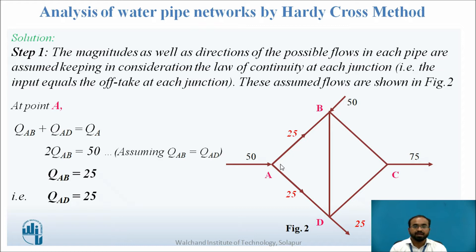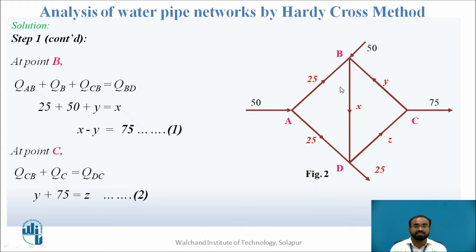Now talking towards the other points where flow rates have been added or removed, we will assume that the flow rate from B to D is X, flow rate from C to B is Y, and flow rate from D to C is Z. Considering point B and writing the equation of continuity — summation of flow rates coming into the point equals summation of flow rates going out — we get: 25 plus 50 plus Y equals X, that is X minus Y equals 75. That is my first equation.